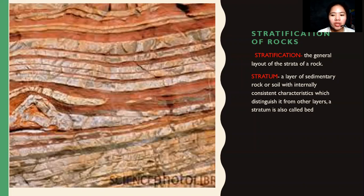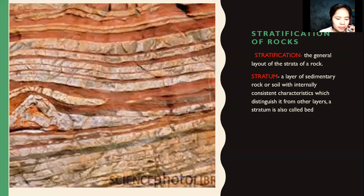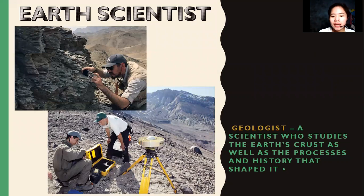A stratum, which distinguishes it from other layers, is also called a bed. Because of its consistent characteristics, a geologist or paleontologist can more easily determine a fossil or rock that differs from other types of stratum. Strata refers to the layers of rocks with internally consistent characteristics.